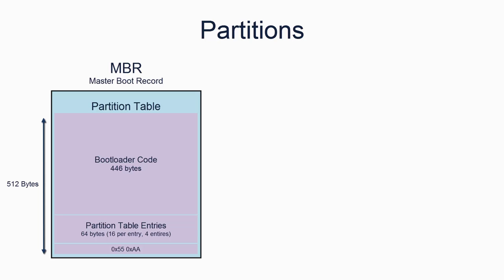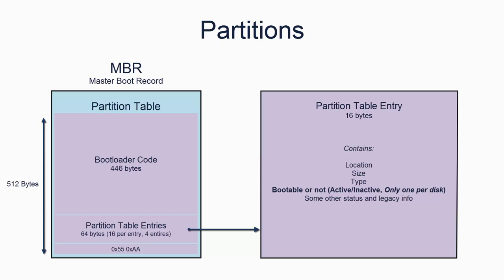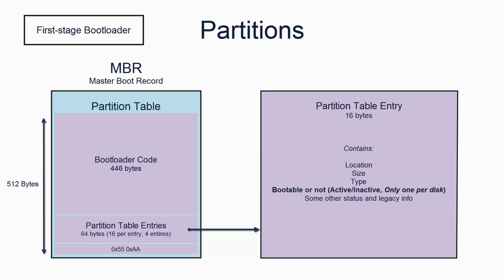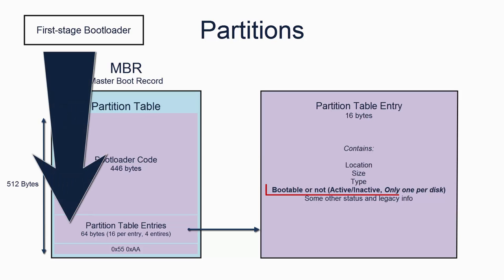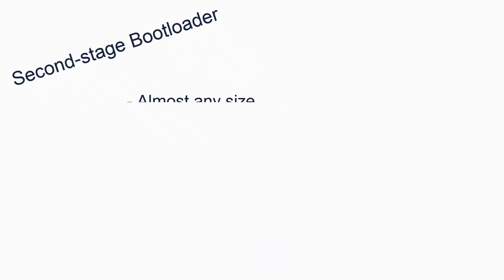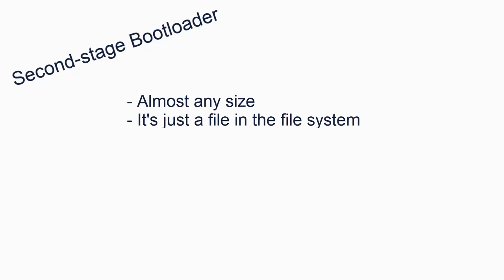MBR gets its name from the fact that under the MBR system you can list up to four partitions on a disk, of which one is marked as a bootable partition. So there is a record of the partition to boot from, known as the Master Boot Record. MBR also includes information about the other three partitions. Note that under GPT you can have a lot more than four partitions. So our first stage bootloader can read the MBR partition table, find the bootable partition, read the file system from that partition, and load the second stage bootloader.